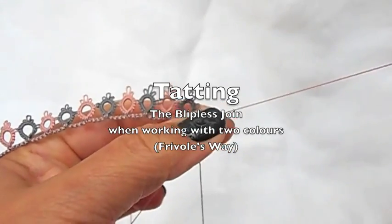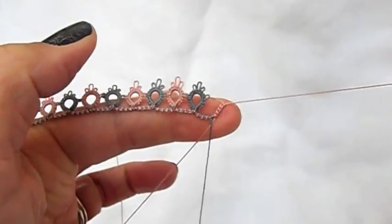This is how I make the blipless join when working with two colors. I started the next ring and I'm ready to make the join.